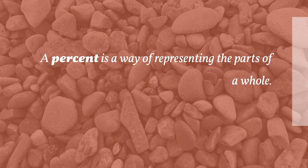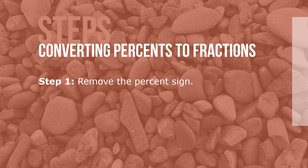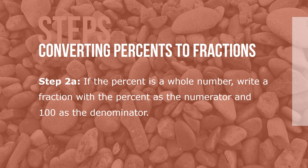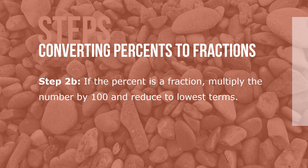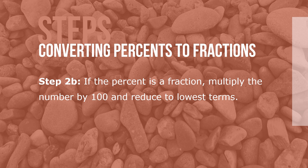A percent is a way of representing the parts of a whole. Percent means per 100 or parts per 100. Here are the steps for converting percents to fractions. Step 1: Remove the percent sign. Step 2a: If the percent is a whole number, write a fraction with the percent as the numerator and 100 as the denominator. If the fraction is improper, change it to a mixed number. Reduce the fraction to lowest terms. Step 2b: If the percent is a fraction, multiply the number by 1/100 and reduce to lowest terms. Step 2c: If the percent is a decimal, convert it to a fraction and multiply by 1/100. Reduce to lowest terms.